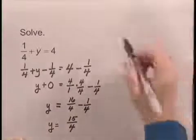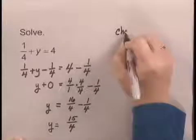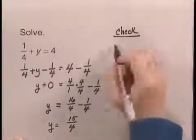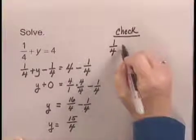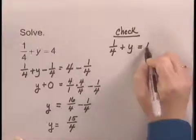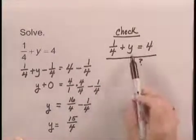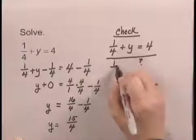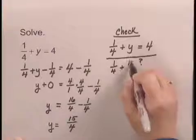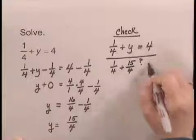To check my answer, I need to write 1 over 4 plus y equals 4. And then I want to substitute 15 fourths for y. I have 1 over 4 plus 15 fourths. Does that equal 4?